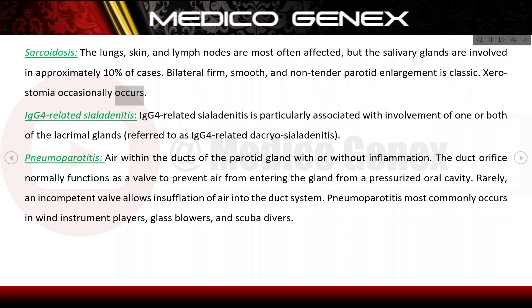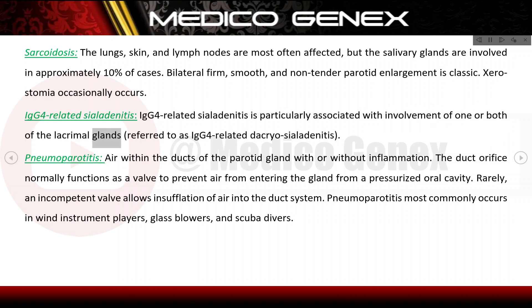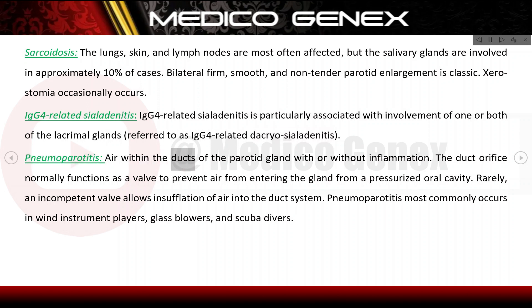IgG4-related sialadenitis is particularly associated with involvement of one or both lacrimal glands. Pneumoparotitis refers to air within the ducts of the parotid gland, with or without inflammation. The duct orifice normally functions as a valve to prevent air from entering the gland from the pressurized oral cavity.